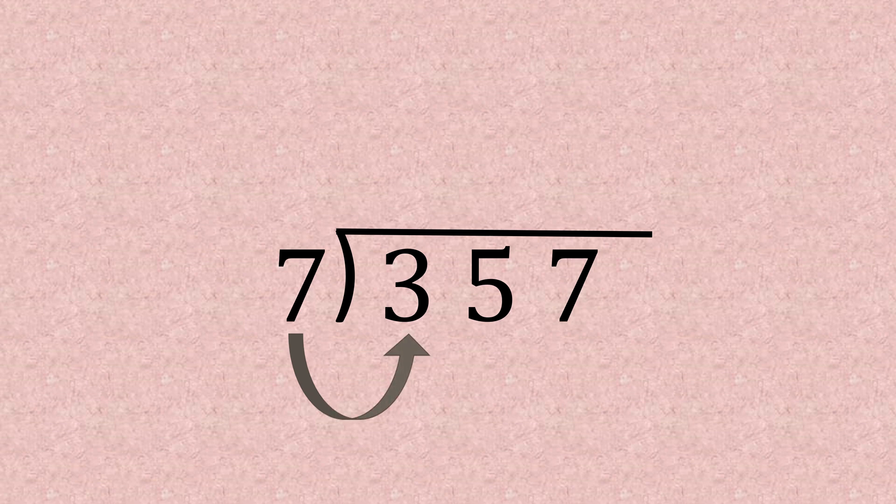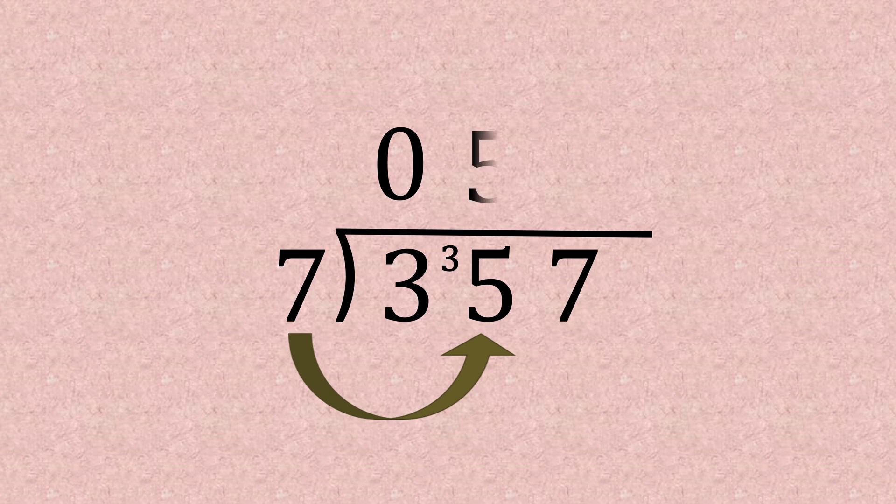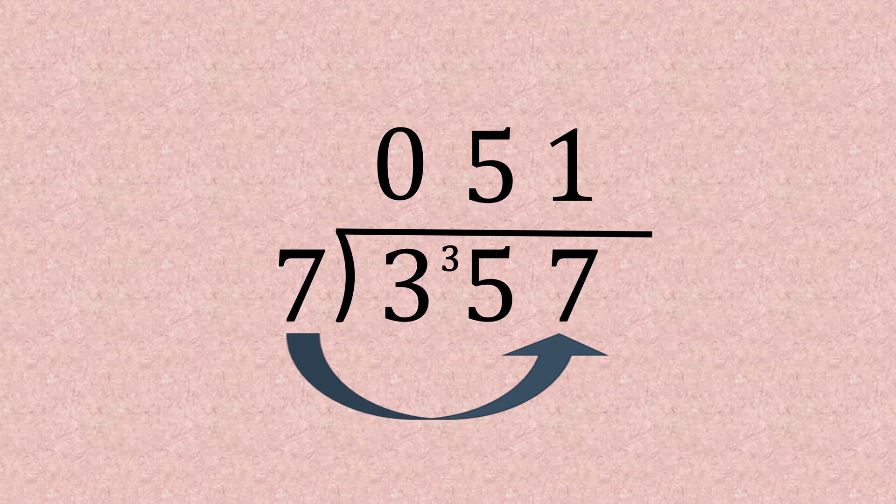Seven into three, this doesn't go, so we just add a zero, then we're going to carry the three over. Seven into 35, we know that one, that goes five times, so we've still got a seven left. Seven into seven goes once, nice and easy, the answer is 51.